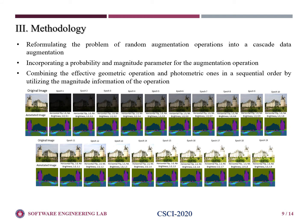We reformulate the problem of random augmentation operation into a cascade data augmentation. We further incorporate the probability and magnitude parameters for the augmentation operations. Combining effective geometric operations and photometric operations in a sequential order, using the magnitude of operation information, provides us unique and diverse data. As we can see, the images have been generated from one simple image — just normal brightness — to quite dark and very bright images. This helps the network learn different patterns about the images.